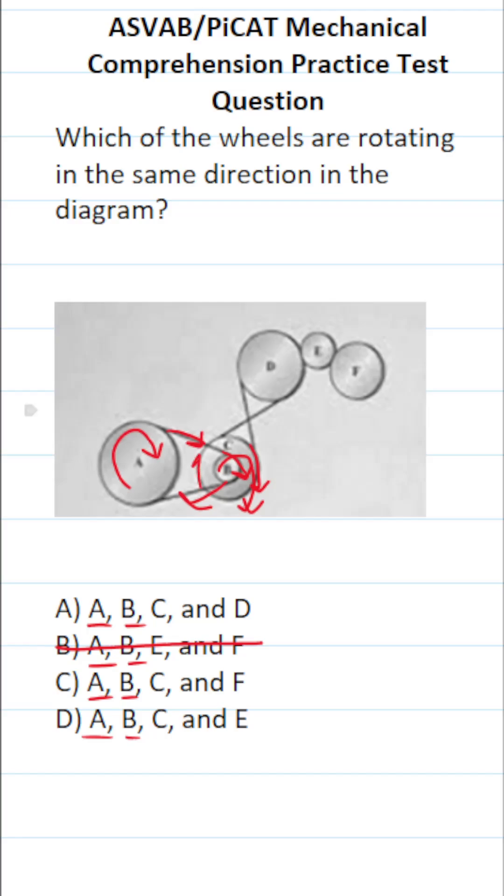So again, wheel C is going to be spinning the pulley this way, which in turn is going to spin wheel D in the opposite direction of wheel A, B, and C. So in this case, we're going to cross out A because D does not spin in the same direction as A, B, and C.